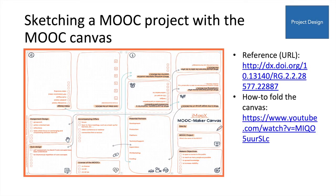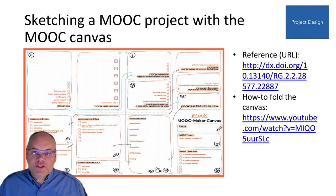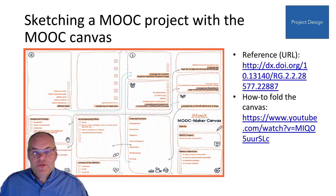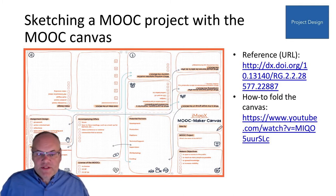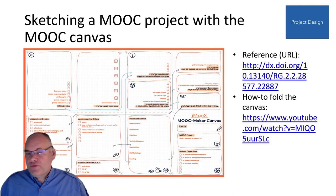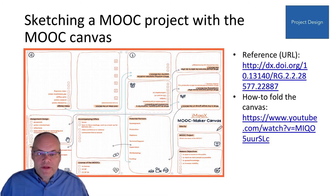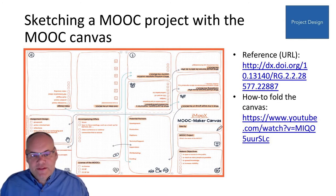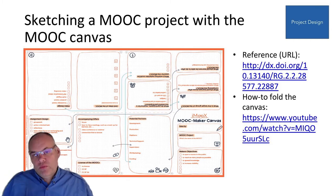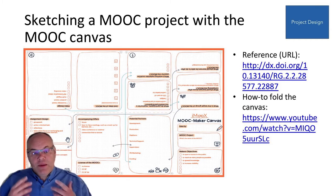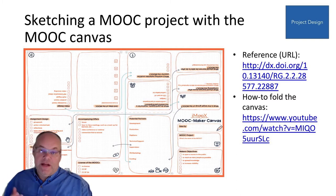One major problem in a MOOC project is taking the first steps. Therefore, Graz University of Technology developed a MOOC Canvas. The MOOC Canvas is intended for the early phase of any MOOC project development and is oriented towards important planning activities around the overall project, considering production through to marketing, cooperation, and topics.